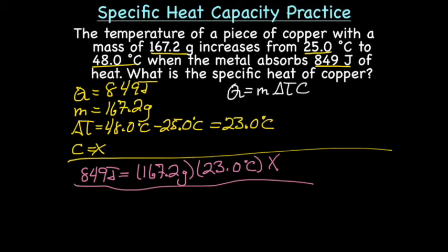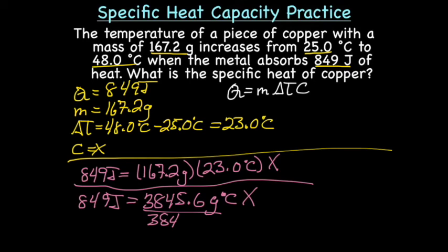So now we're going to solve for X. We'll have 849 joules equals 3845.6 grams degrees Celsius X. Okay, and then to solve for X, we will divide by whatever's next to the X.